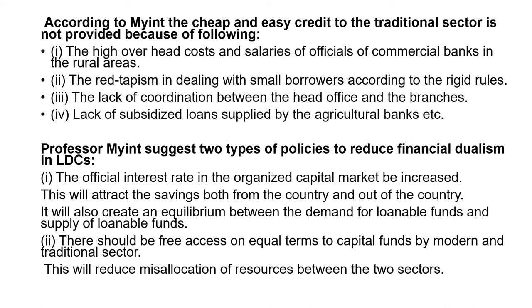Professor Min has suggested some policies to reduce financial dualism in least developed countries. This can be achieved either by increasing the official interest rate in the organized capital market, or by making free access on equal terms to capital funds available to both the modern sector and the traditional sector. Raising the interest rate in the organized capital market will attract savings from within and outside the country and create equilibrium between the demand and supply of loanable funds. Making both sectors able to access credit equally will reduce the misallocation of resources and thereby reduce financial dualism in LDCs.